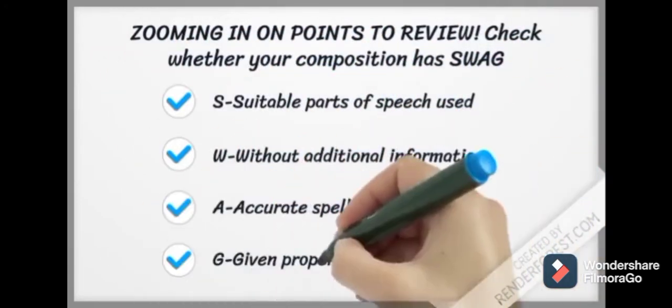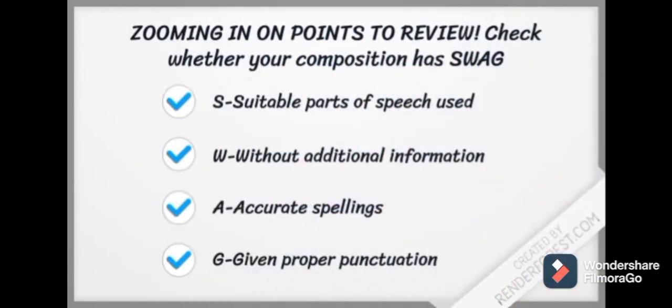Students, I hope you have learned how to write a guided composition with the given example. Remember, you have to check whether your composition has SWAG, where S stands for suitable parts of speech. When I say parts of speech, it means suitable conjunctions, articles, prepositions, and helping verbs.